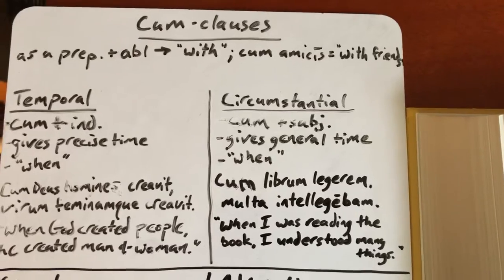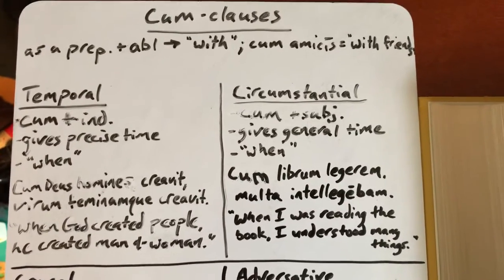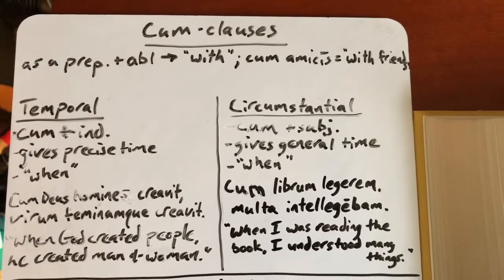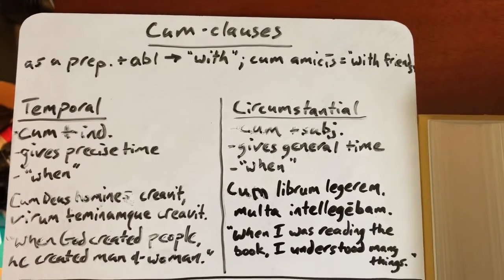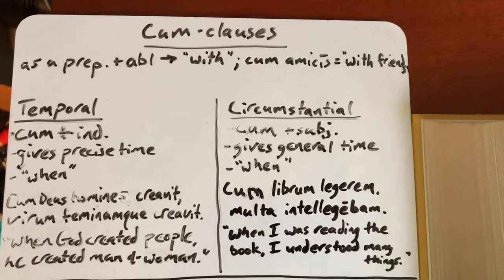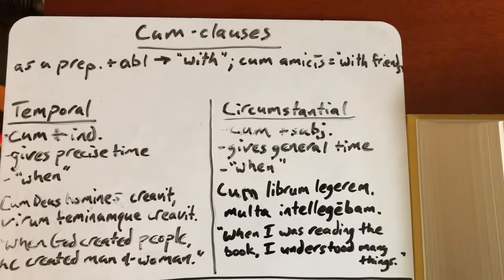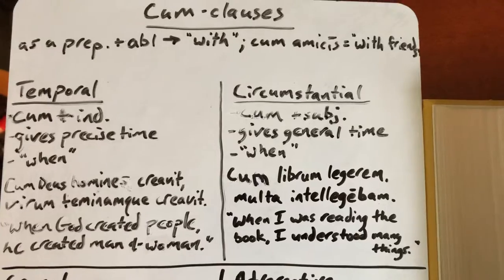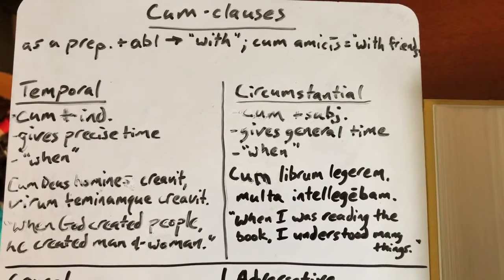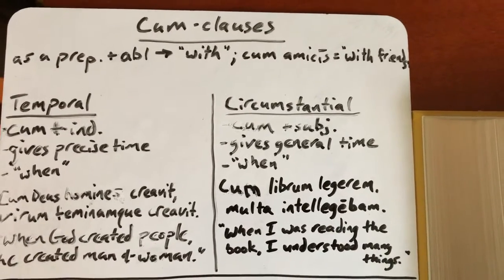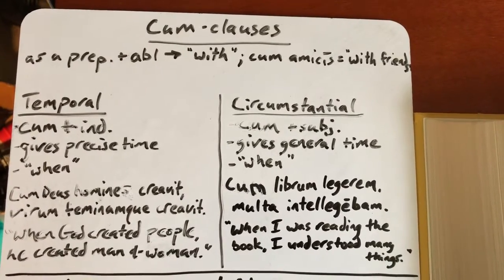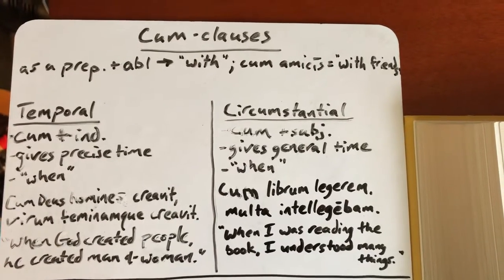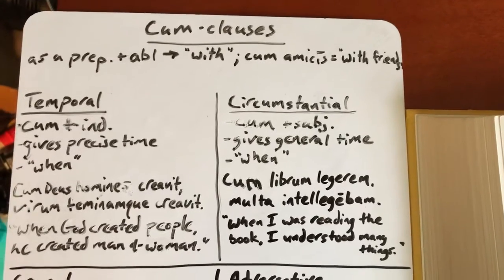There are four different types of cum clauses. The first is cum temporal. This one is unique because it is the only one that takes an indicative verb — cum plus the indicative. Temporal, from the Latin word tempus, means time. The cum temporal gives the precise time when an action occurred and is translated with the word 'when.' For example: 'When God created people, he created man and woman' — talking about an exact, precise time.